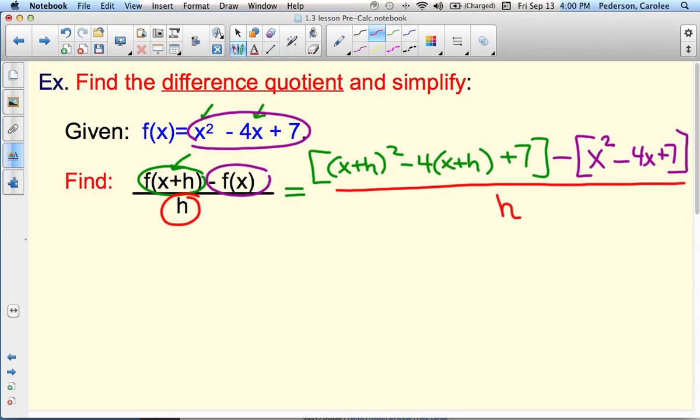Now I have some simplifying to do. So I'm going to take care of the green simplification in that bracket. In that bracket, I have x plus h times x plus h. So I have to FOIL there. And then I have a negative 4 that I have to distribute to both terms in that parentheses. So negative 4x, negative 4h, and then the plus 7.